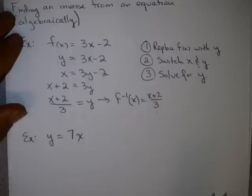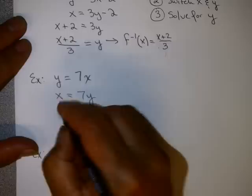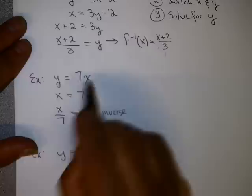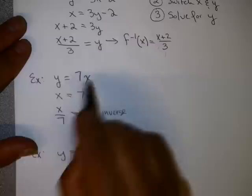Let's do this one. This one doesn't start with f of x, so you can skip that first step and just switch x and y. Solving for y, I get x over 7 equals y. Now, is this the inverse? Think about this original function: y equals 7 times x. You take a number, you multiply by 7, you get the answer. The inverse function: you would take that answer, divide by 7, and you'll get back to the original number.